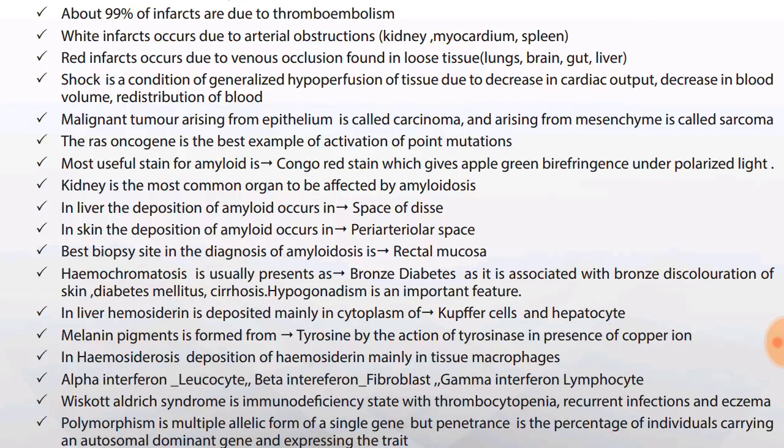In liver, deposition of amyloid occurs in the space of Disse. In skin, deposition of amyloid occurs in peri-arterial space. Best biopsy site in the diagnosis of amyloid is rectal mucosa — when a person has amyloidosis, biopsy is taken from rectal mucosa.